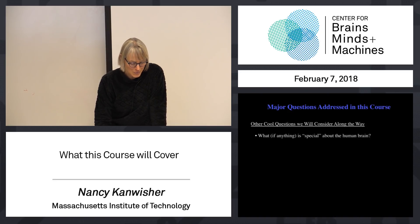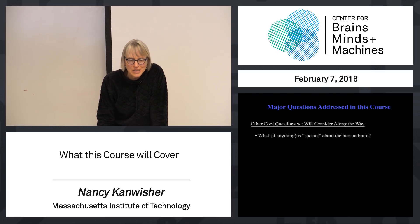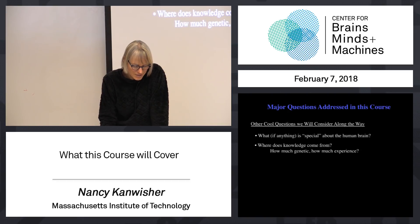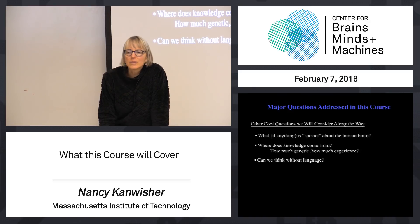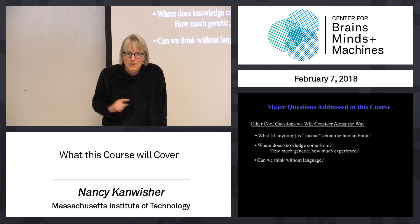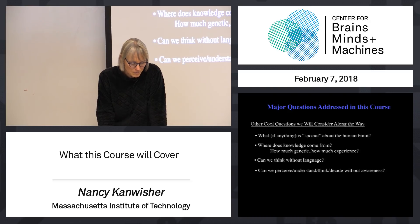A few other cool questions we're going to ask along the way: What, if anything, is special about the human brain — maybe not shared with other primates? I love that question. I don't think there are crisp answers yet but there's a lot of interesting thinking about it. Where does knowledge come from? How much is genetic? How much do we learn? Can we think without language? It feels like one of those things probably every one of you has thought about. And now actually there are really good empirical answers from cognitive neuroscience — I think there's a pretty strong answer to that question.